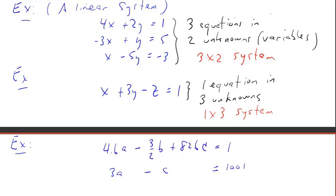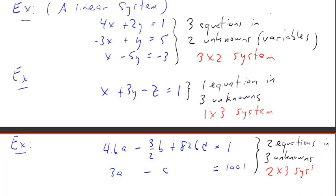Another example. In this system we have three unknowns: A, B, and C, and two equations. Two equations and three unknowns gives us a 2 by 3 linear system. Notice that not all the variables are in all the equations. In particular, the second equation is missing the B variable, and that's perfectly okay.